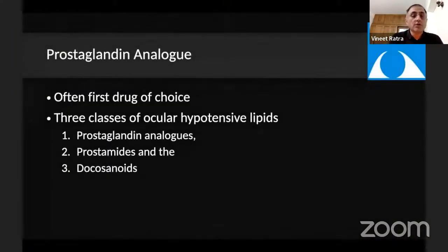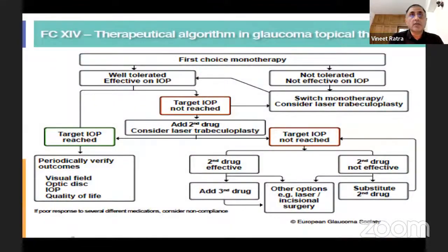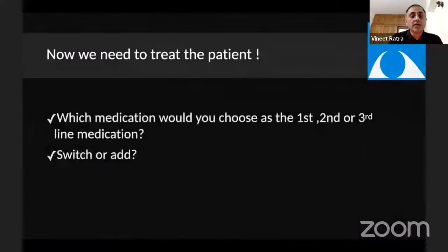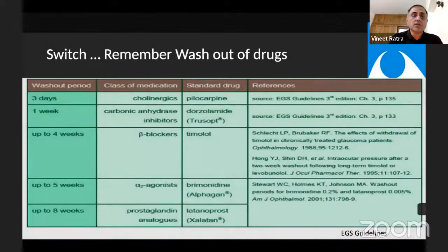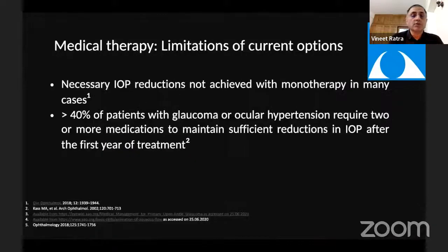This patient was already on prostaglandin analogs and the target IOP was not reached. So what is our second option? One option is to add a second drug or to consider laser trabeculoplasty. If adding a second drug, do we switch or add? If you were having a 15% fall in IOP with the first medication, it makes sense to add a second drug. If you are switching drugs, one needs to remember the washout of drugs. Nearly 40% of patients require two or more medications to maintain sufficient reductions in IOP.